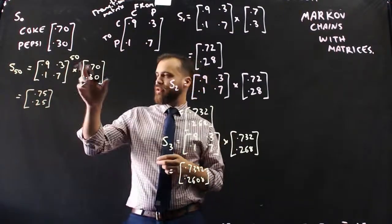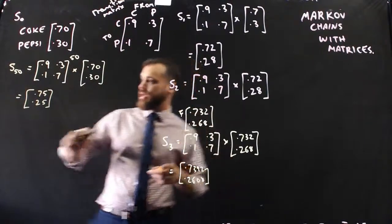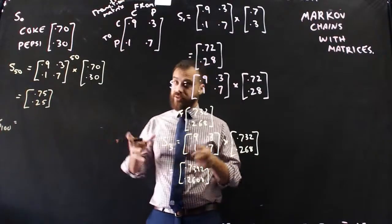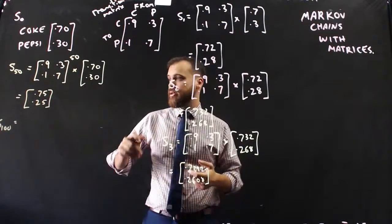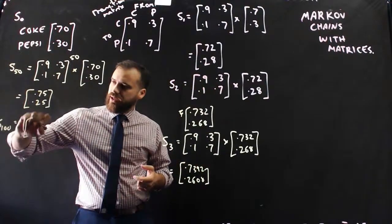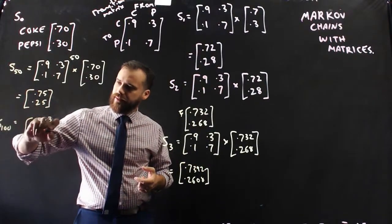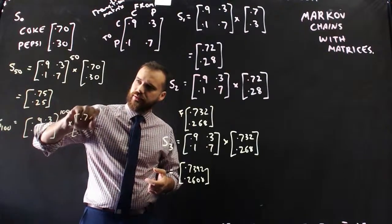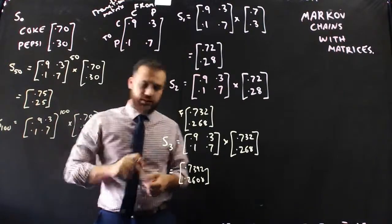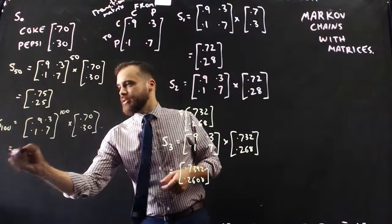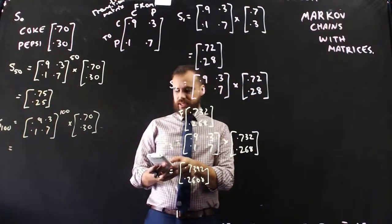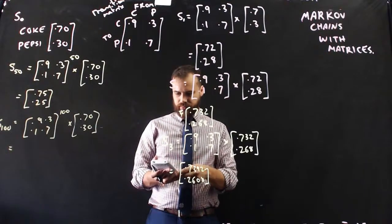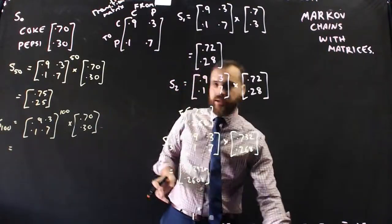If I type in state 100, so 100 months have passed of all of these changes happening, that's going to be equal to the transition matrix to the power of 100 times the initial state. If I type that into my calculator, you would expect to see some amount of change here, however small, but in fact, you do not.